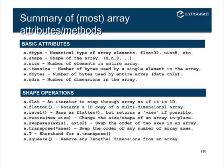Swap axes allows you to swap two dimensions — for example, an array of size 3×4×5 swapped on the first and last axis becomes size 5×4×3. Transpose allows you to specify the order of N axes you want to transpose. A.T is a shortcut for transpose. A.squeeze removes size-1 dimensions from the array.